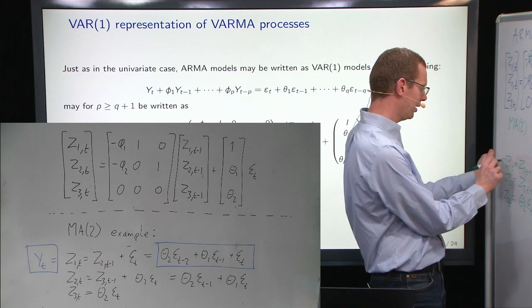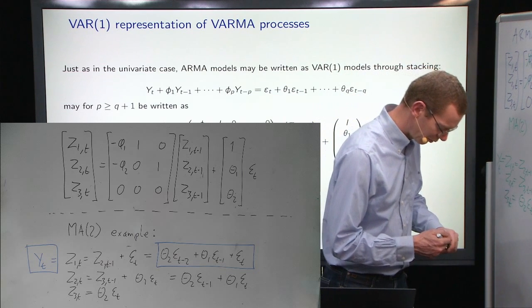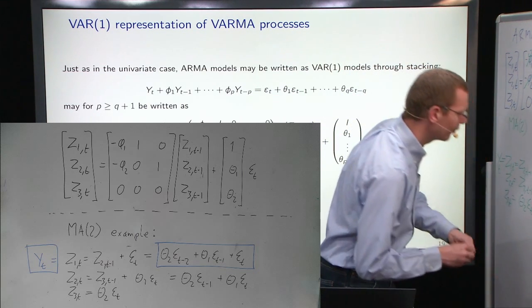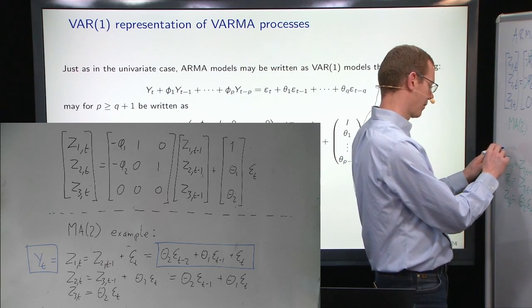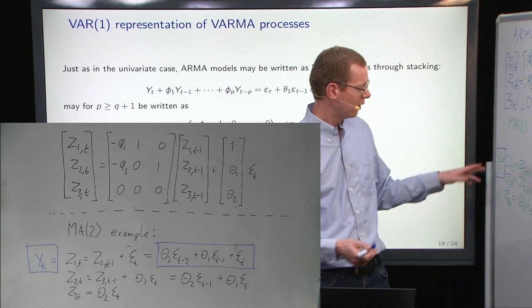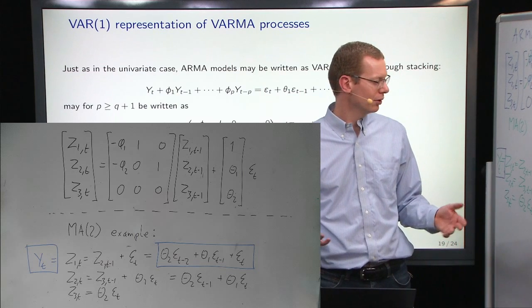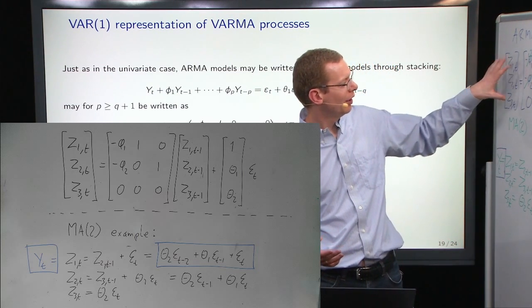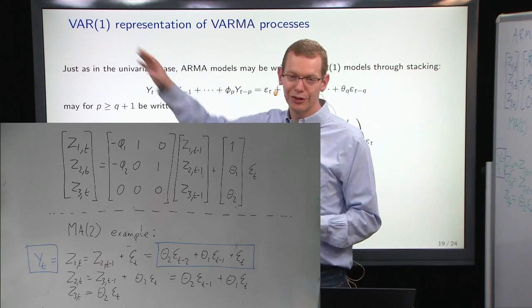And if we then add out here yt equal to this, then we can look at this part here and that part. And we have a traditional univariate MA(2) model represented as a first-order vector autoregressive model.